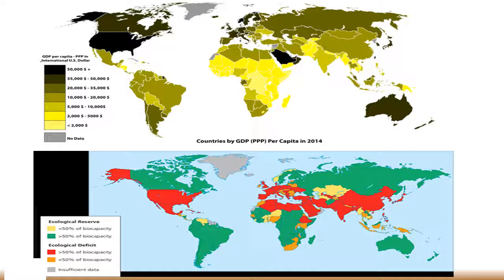Countries in the high income category of greater than $20,000 GDP are colored in dark black and dark green. Notice that Canada and the United States are included in this category, as well as Argentina, Chile, and Uruguay in South America. Australia, New Zealand, Japan, Russia, and much of Europe are also included.